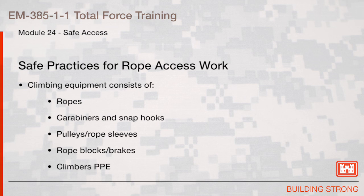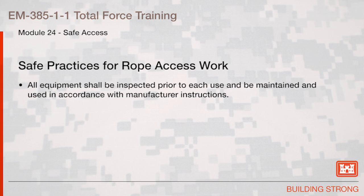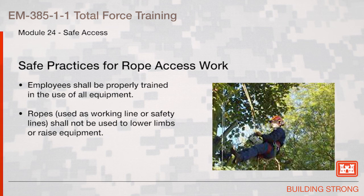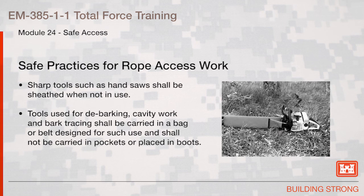Safe practices for rope access work: Climbing equipment consists of ropes, carabiners and snap hooks, pulleys, rope sleeves, rope blocks, brakes, and climbers' PPE. All equipment shall be inspected prior to each use and maintained in accordance with the manufacturer's instructions. Employees shall be properly trained in the use of all equipment. Ropes used as a working line or safety line shall not be used to lower limbs or raise equipment. Sharp tools such as hand saws shall be sheathed when not in use. Tools used for debarking, cavity work, or bark tracing shall be carried in a bag or belt designed for such use.